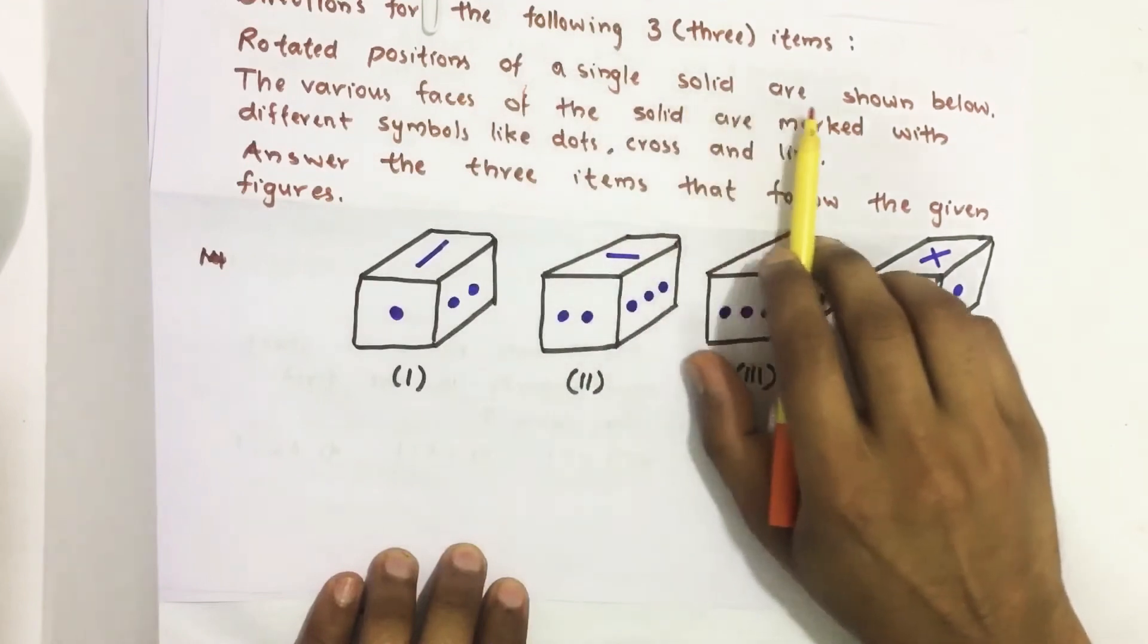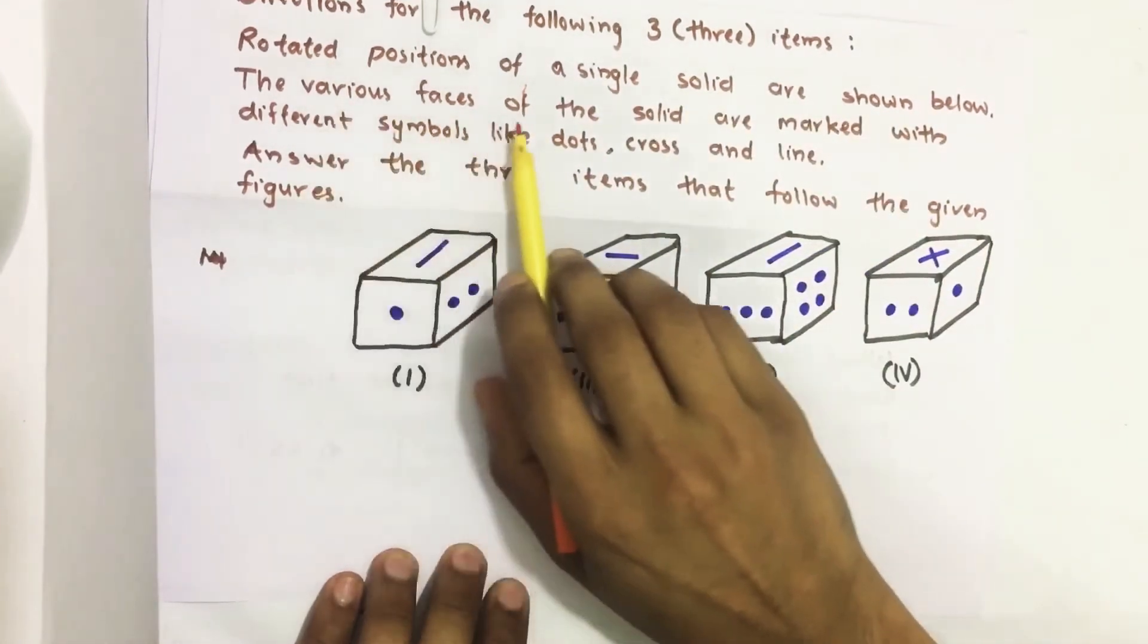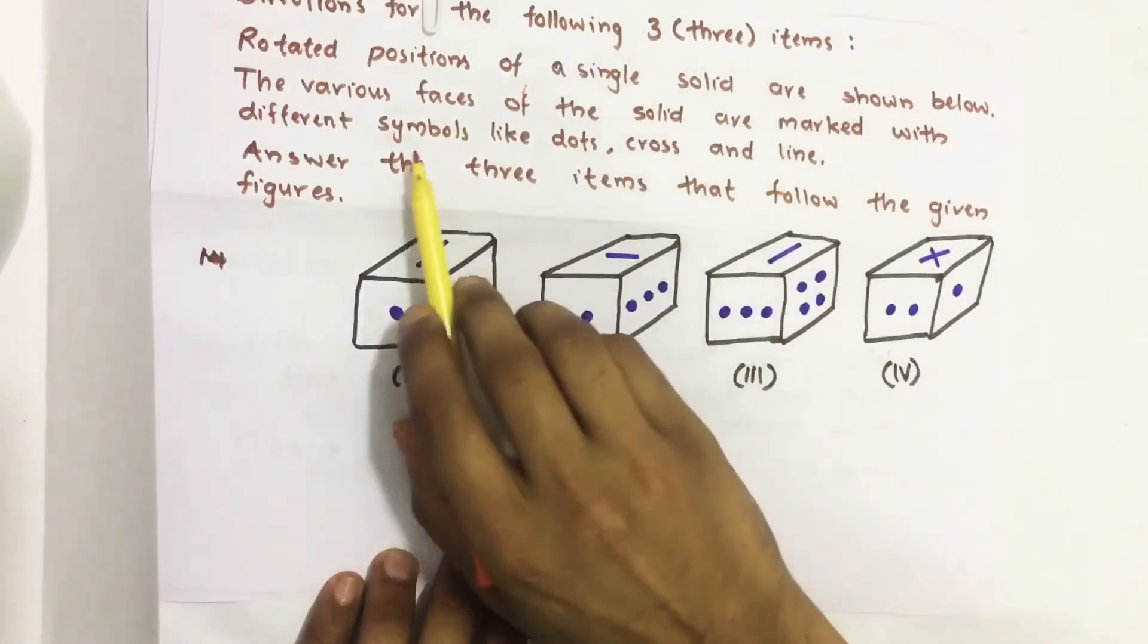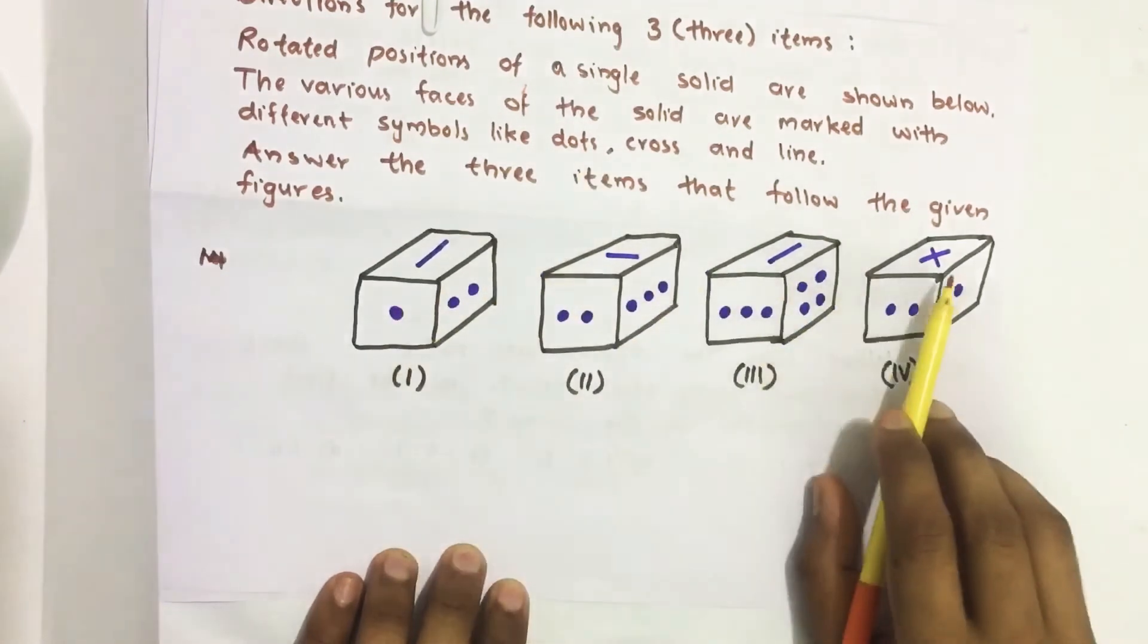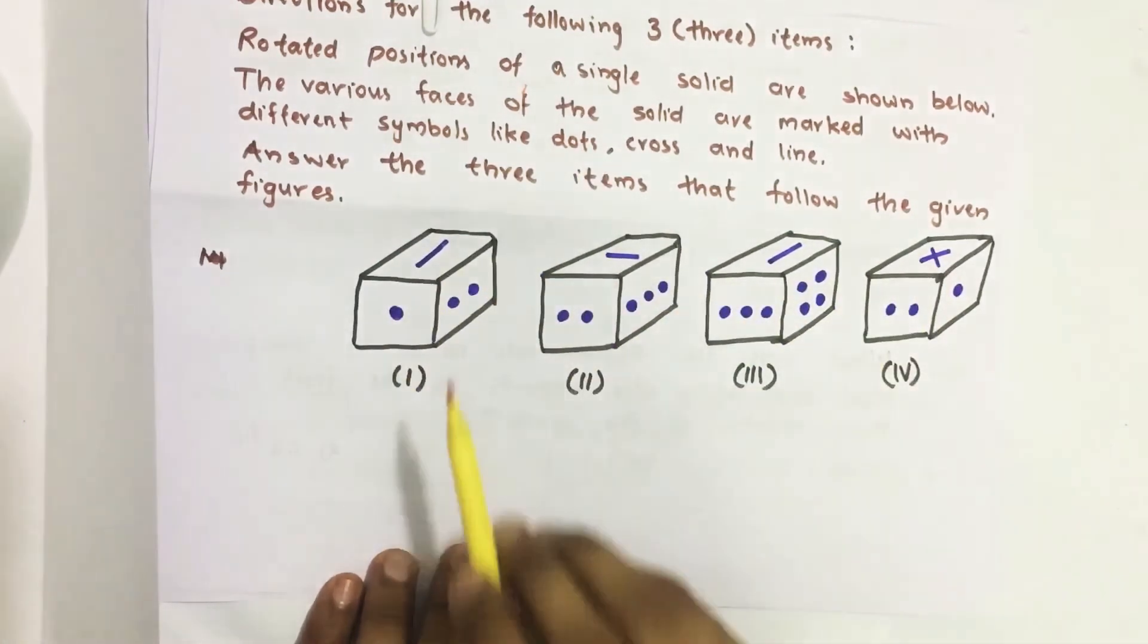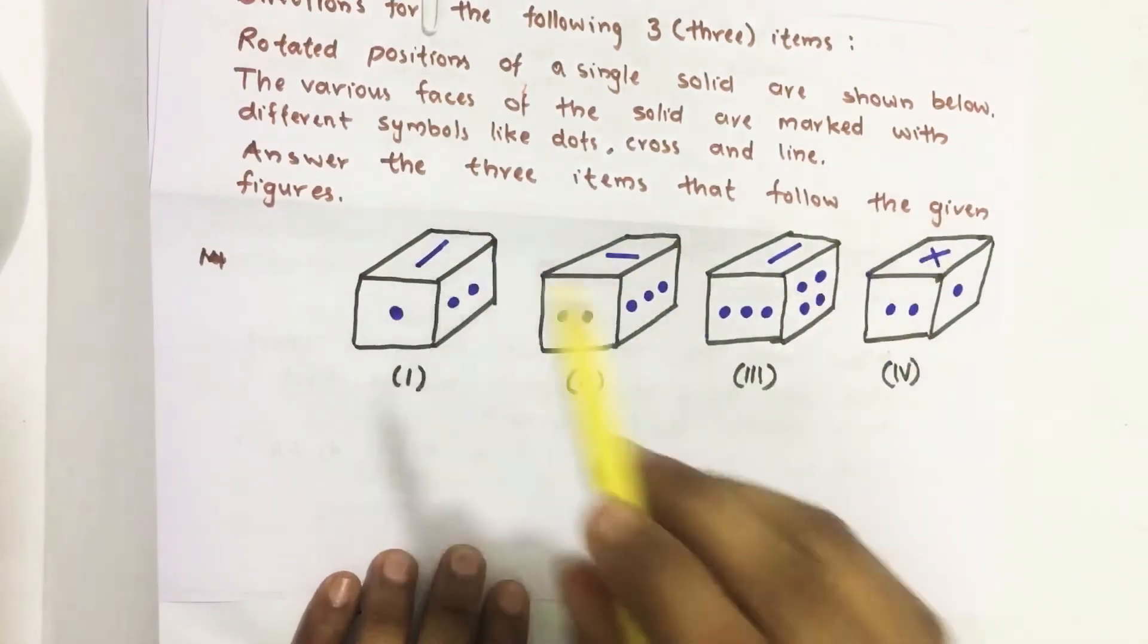Rotated position of a single solid are shown below. The various faces of the solid are marked with different symbols like dot, cross and line. Answer the three items that follow the given figure.